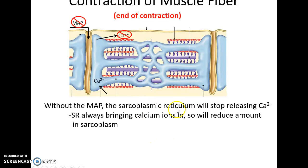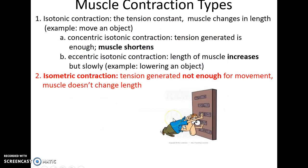Eventually contraction will end when the sarcoplasmic reticulum stops releasing calcium ions. It will then actively bring the calcium ions back into itself, storing them and reducing the calcium concentration in the sarcoplasm.